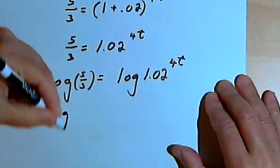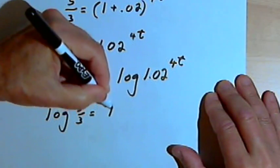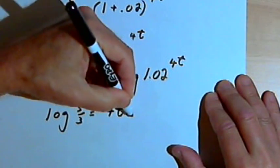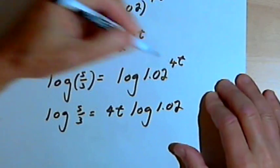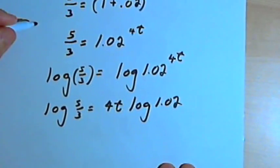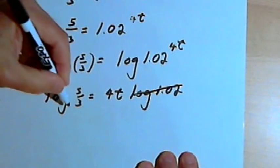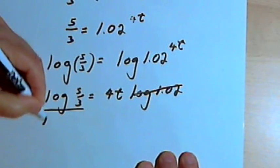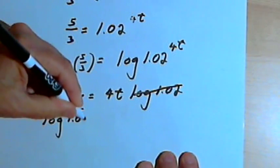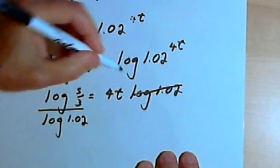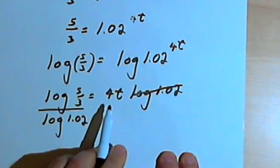I'm going to get the log of 5 thirds equals 4t times the log of 1.02. Now I just want to divide both sides by the log of 1.02. So I have the log of 5 thirds over the log of 1.02. That equals 4t. And then I would just divide both sides of the equation by 4.